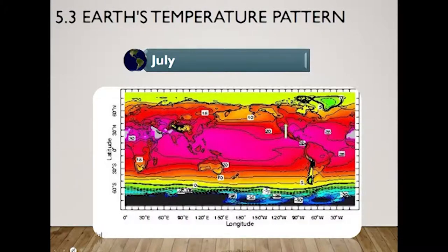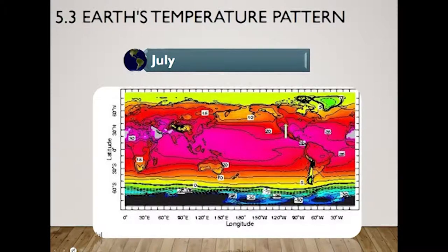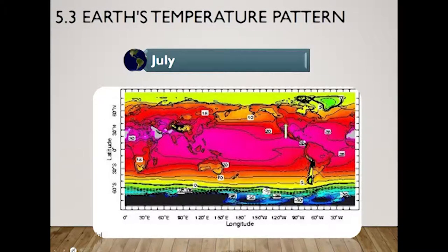Global patterns of air temperature are a reflection of the relative importance of sun angle and insolation intensity, day length, and location with respect to water bodies. Low-latitude locations experience less variation in sun angle and day length than mid and high latitude locations. Places located near large bodies of water tend to have more moderate temperatures than those found inland.